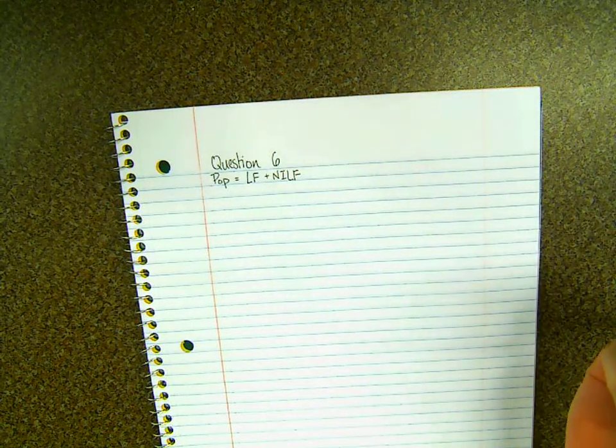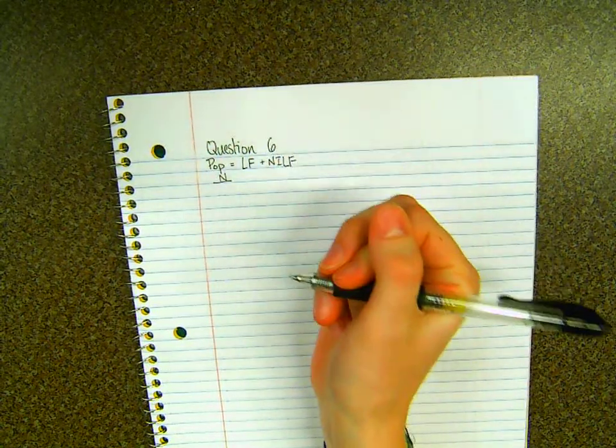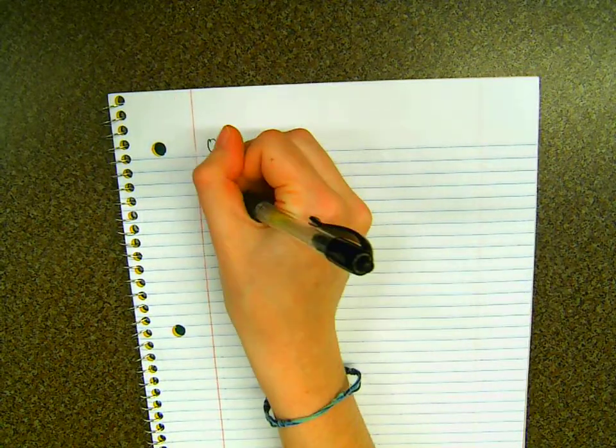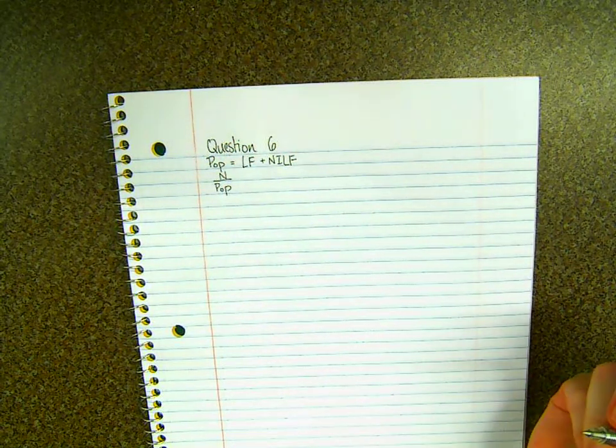Now define the employment-to-population ratio as the fraction of the population that is employed.